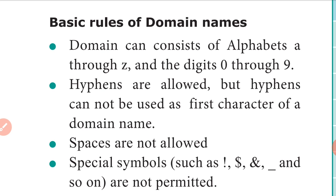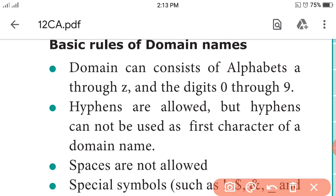So the basic rules of domain names - what are the rules to follow for domain names? First rule: domain name consists of all puppets A to Z, digits 0 to 9, and other allowed characters. This is a three-mark question.